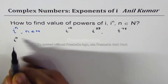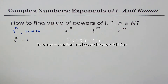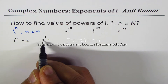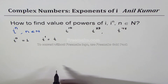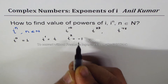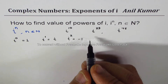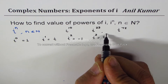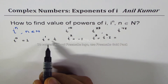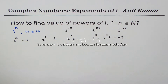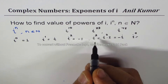To begin with, i to the power of 0 is 1 — anything to the power of 0 is 1. i to the power of 1 is i itself. i squared is minus 1 — that's the definition. i cubed is i squared times i, and since i squared is minus 1, i cubed equals minus i.